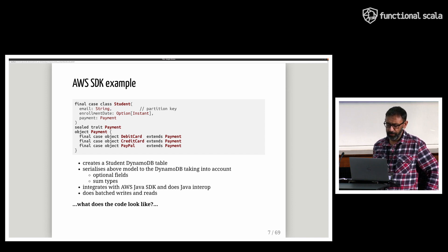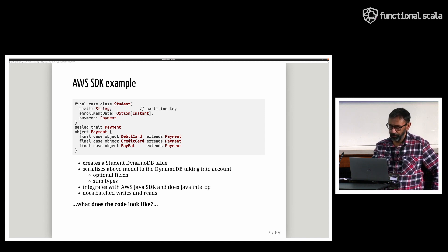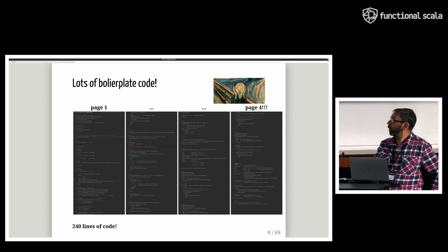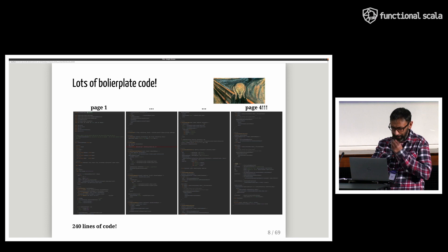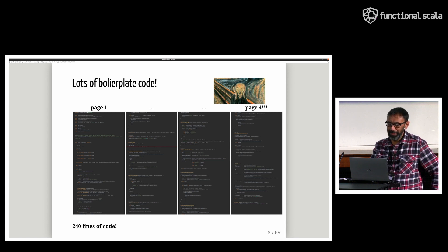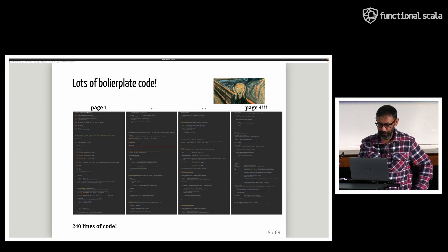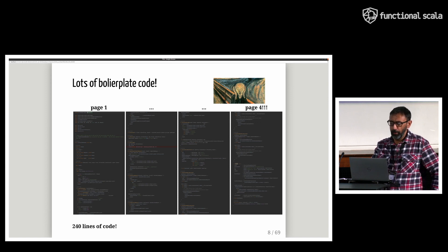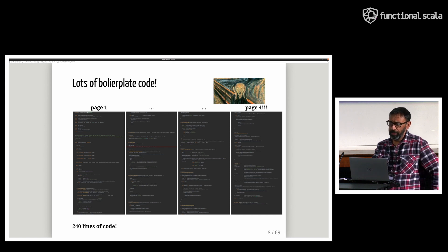To accomplish all this, what does the SDK example look like? That's 240 lines of code. It deals with stuff like SDK builder classes, Java interop including interop with Java collection types and completable futures, low-level error handling, et cetera. So much boilerplate code that I'm not going to cover it here. If you want the full gory details, you can watch last year's talk or look at the SDK example in the microsite or in the repo.